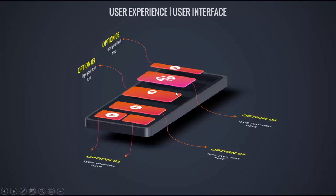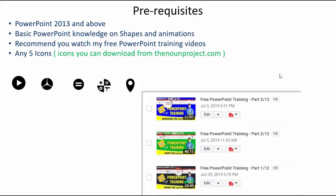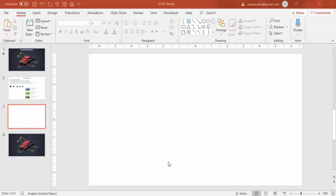You can see options three, four, and five with the shadow effect. These are the prerequisites to make this slide: you need PowerPoint 2013 and above, basic PowerPoint knowledge on shapes and animations. I recommend watching my free PowerPoint training videos. You also need five different icons, or you can download them from thenounproject.com.